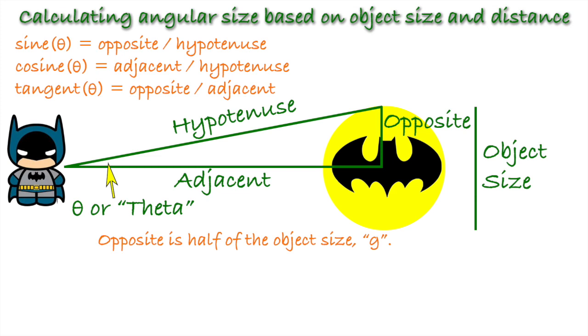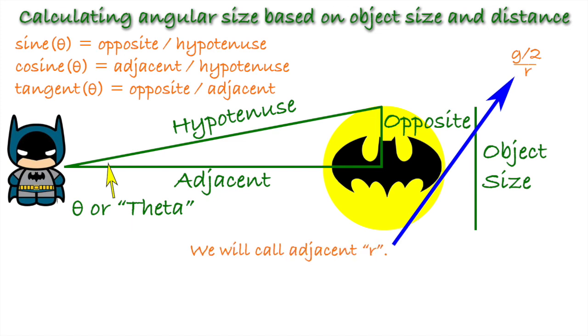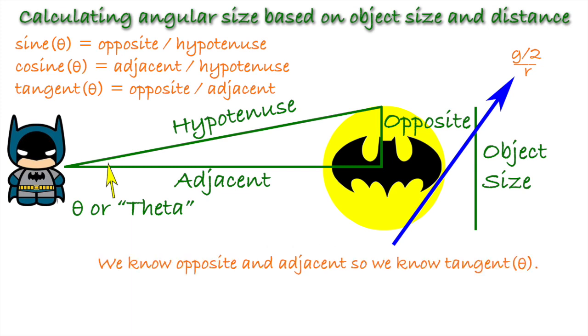We know the diameter of the bat signal. Let's call it G. If we divide it in half, this is the length of the opposite side of the triangle. This is just G over 2. We also know the distance from Batman to the bat signal, which is the length of the adjacent side of the triangle. Let's call that R. When we divide the length of the opposite side by the length of the adjacent side, we get one of these special ratios called tangent.